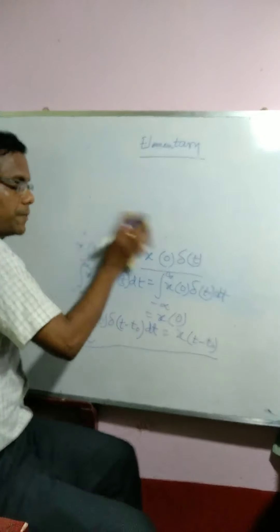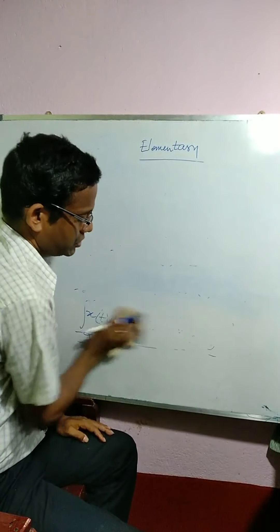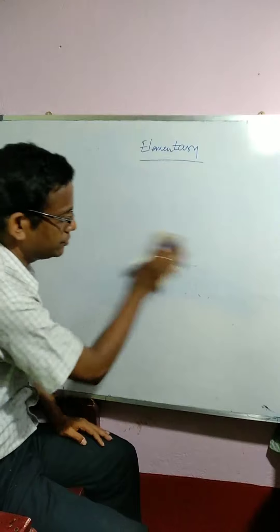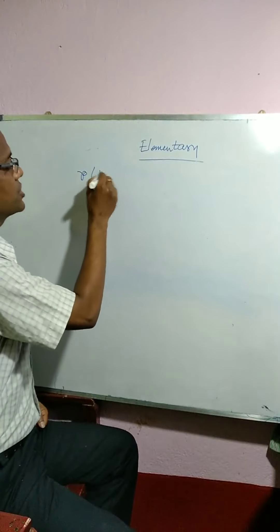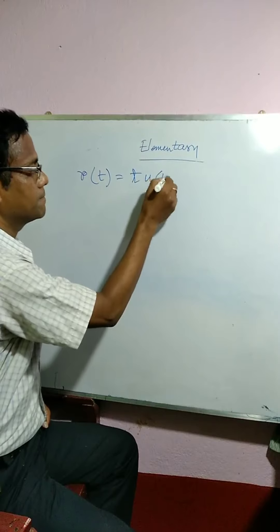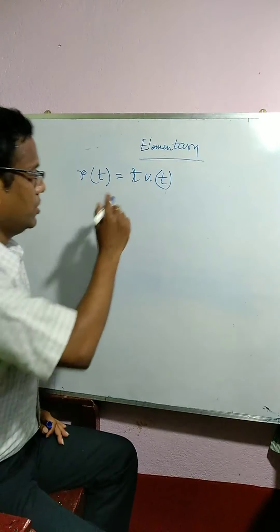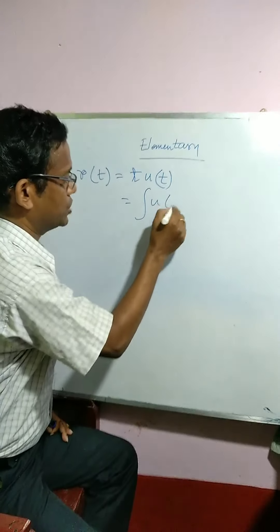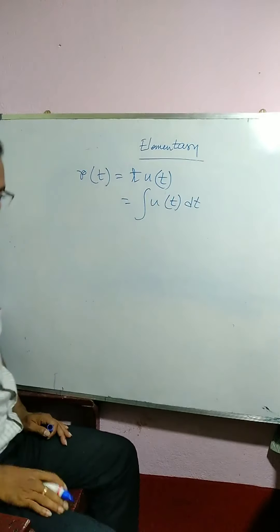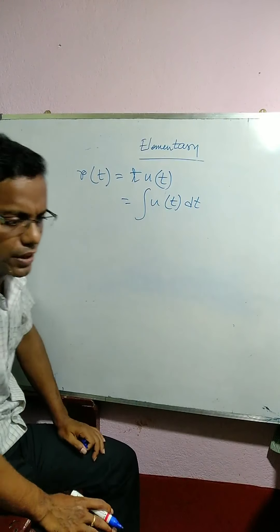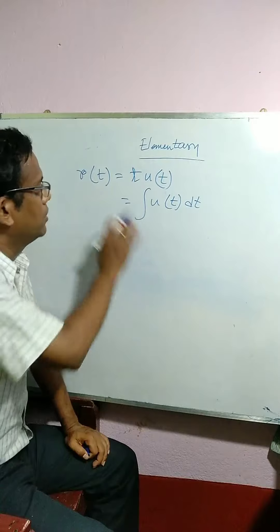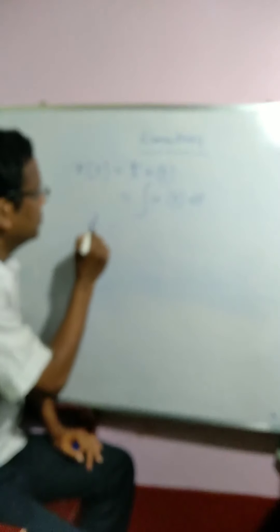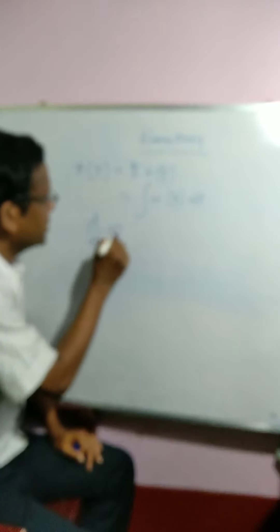Now, we can see the relation between three signals: ramp, step, and delta. We have already seen that r(t), the ramp function, equals t into u(t). That means if you integrate u(t) over a finite time interval, you will get the ramp function. Similarly, if you take the derivative of the ramp function, you will get the step function.